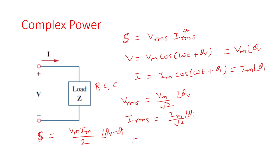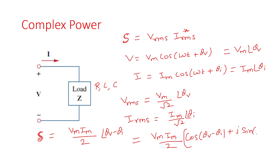Writing the same in rectangular form, the complex power is (Vm·Im)/2 · [cos(θv − θi) + j·sin(θv − θi)]. The rectangular form and the polar form of the complex power are both shown here.